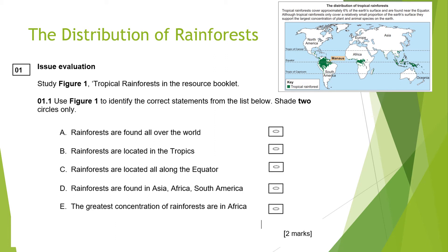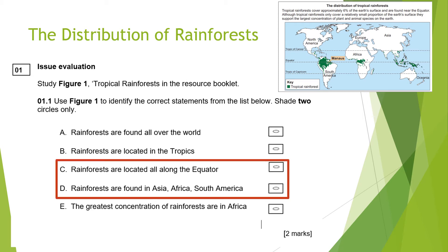Hopefully you have selected your answers for that section. The correct options for that question were C and D. You should be able to see that rainforests are located all along the equator, and as we mentioned previously they're found in Asia, Africa and South America. You can see that they're not all over the world because there are large sections of white space. The greatest concentration of rainforest is not in Africa — it is actually within South America — and rainforests are located in the tropics, though some are on the lines of the tropics with a spread as well.